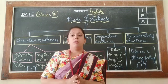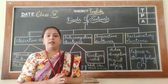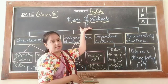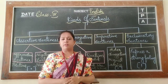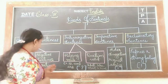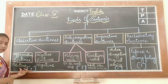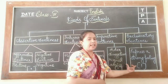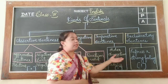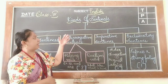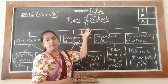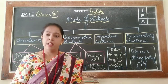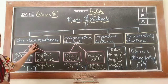Now in this class you are going to learn kinds of sentences. A sentence always starts with a capital letter and ends with a full stop, question mark, or an exclamatory mark — these are nothing but different types of sentences. There are four types of sentences: assertive sentence, interrogative sentence, imperative sentence, and exclamatory sentence.